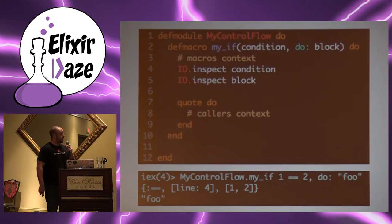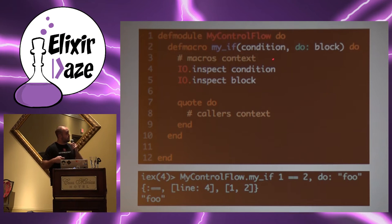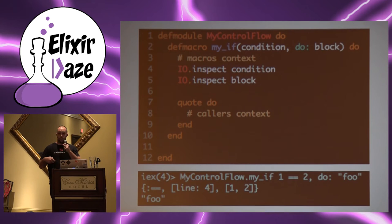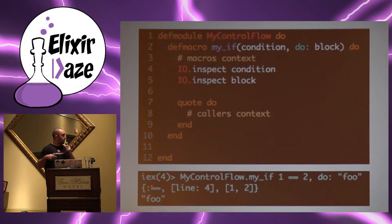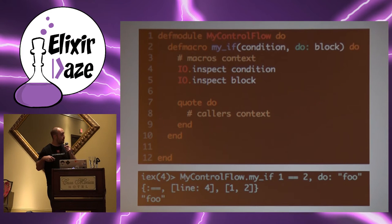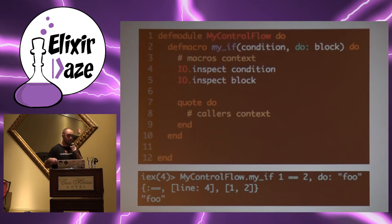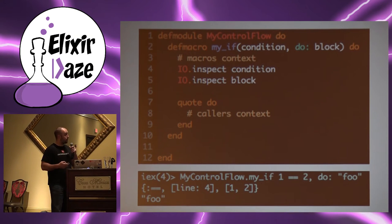In my macro there's a comment that says 'macros context.' Up there everything behaves as we expect — you can make functions, variables, do whatever you want. Down here in the quote block, that's what the macro returns, and it will be injected into the caller's context. That's where things start to get a little weird. We'll inspect the condition and the block of our if macro, calling it in the REPL passing in a string. The AST is a three-element tuple — we have the == macro, line four metadata, and our arguments one, two, with the block being the string.